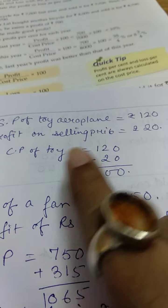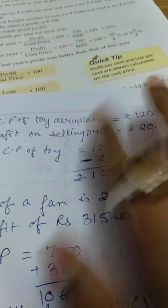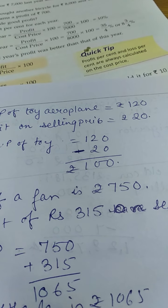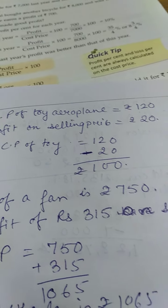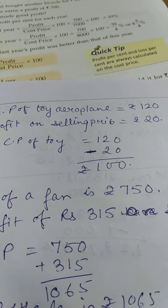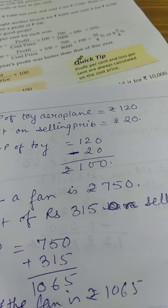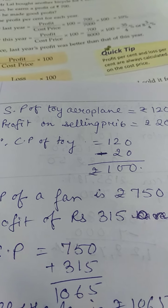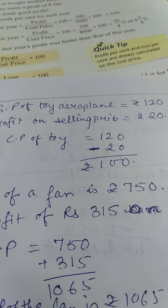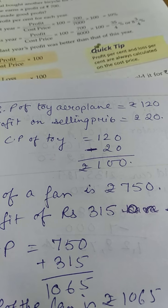Once again, I am reading it. SP of the toy airplane, you have to write it in this way only. If you don't write, then you will not get the numbers. SP of the toy airplane is 120. Profit on selling price is Rs. 20. That means CP of the toy airplane is 120 minus 20, which is 100.